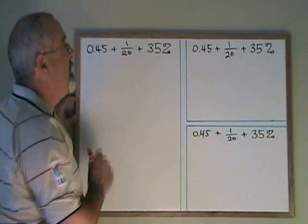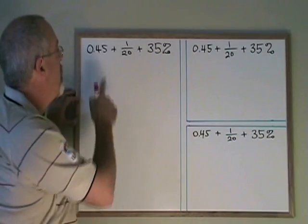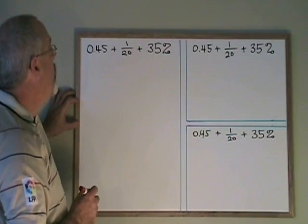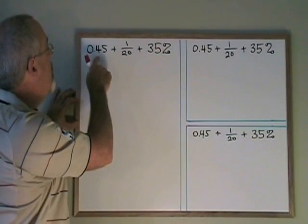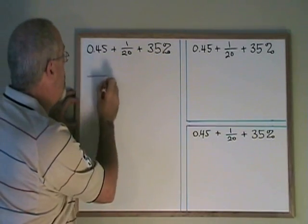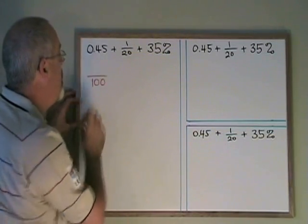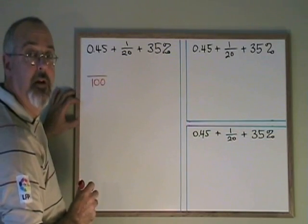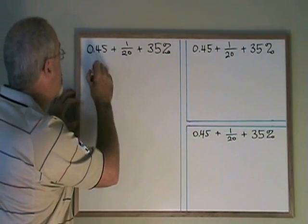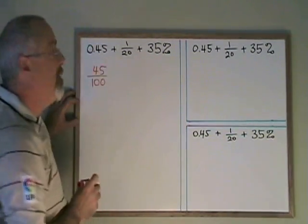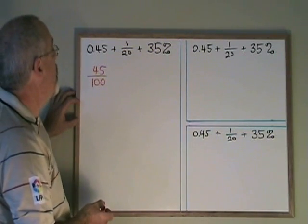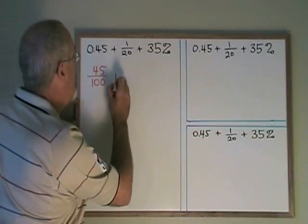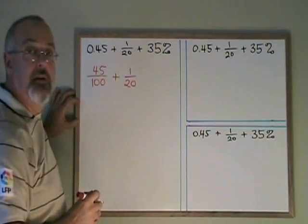For the first example, I'm going to convert everything in this expression into fraction. 0.45 has two numbers after the decimal, so I write the denominator of 100, a one with two zeros, as many zeros as there are numbers after the decimal. Then I write the numbers after the decimal as my numerator, and I don't bring the decimal with it. 0.45 is equivalent to 45 hundredths.